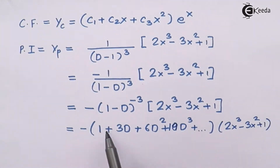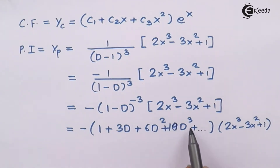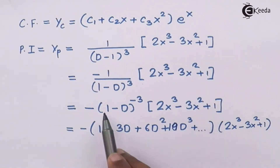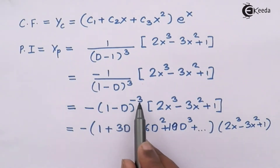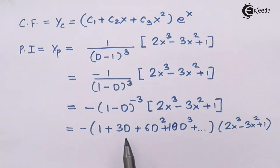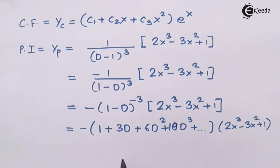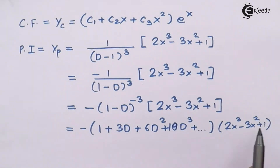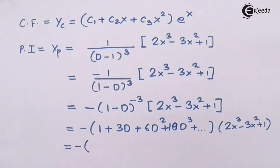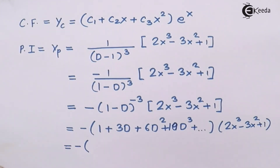Now I can apply formula number 6 for this. Here I have written the expansion formula: 1 plus 3D plus 6D square plus 10D cube plus so on, which is the expansion of (1 minus D) raised to minus 3. Then we have written the right-hand side. What we do is apply each and every term of the operator on the right-hand side. With the negative sign carried through, when I multiply the right-hand side by 1, we get all terms as they are: 2x cube minus 3x square plus 1.